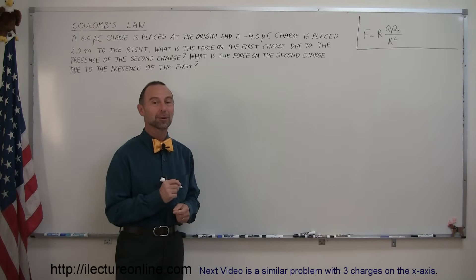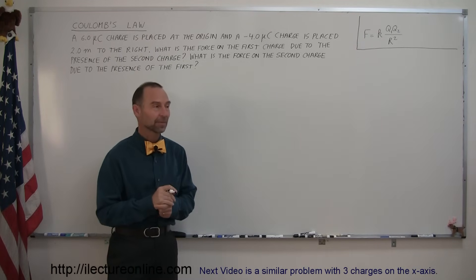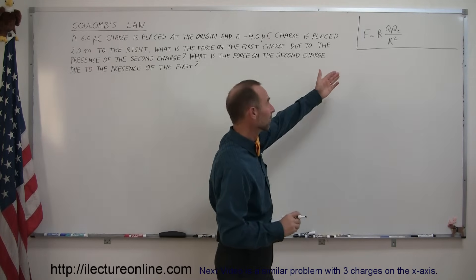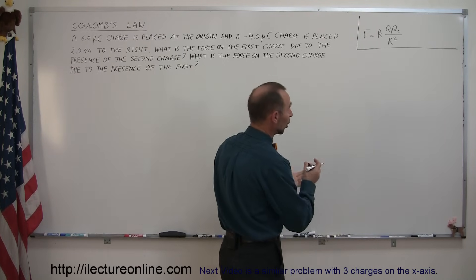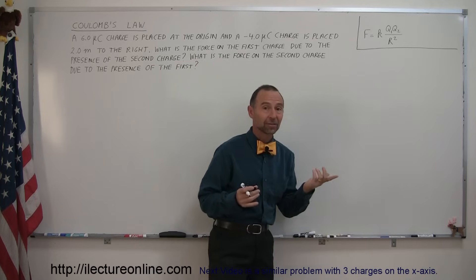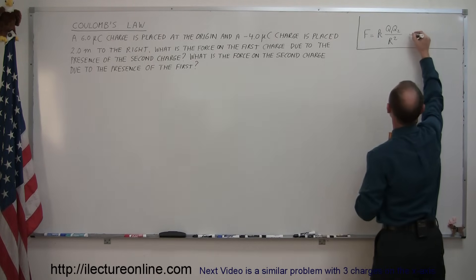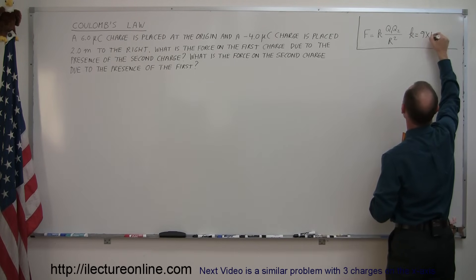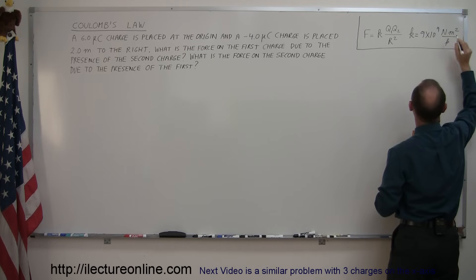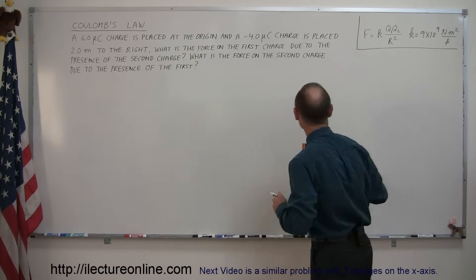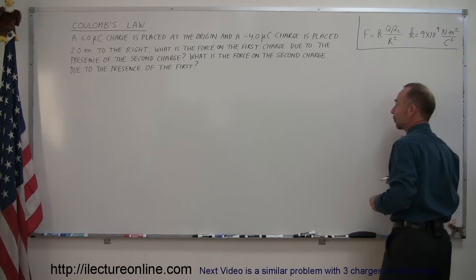Welcome to I Lecture Online. Today we're going to do some problems involving Coulomb's Law. Here's the equation that describes the force that exists between any two charges, q1 and q2, depending upon the distance between them r squared. K is a constant of proportionality and k equals 9 times 10 to the ninth Newton's meters squared per Coulomb squared. Coulomb is a unit of charge.